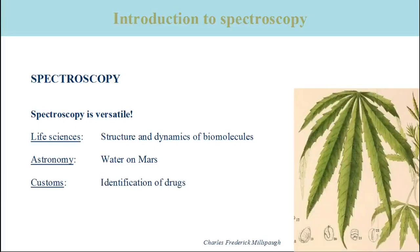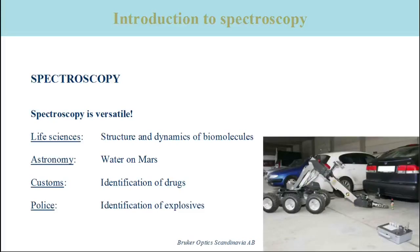Another example comes from customs, which uses this technique to identify drugs. For example, when they confiscate a suspicious powder, they have to know what it contains, so they use this technique to identify the content of the powder. The police also uses this technique to identify explosives. The slide here shows a robot that can be used to study a suspicious object — it opens the object, takes out a sample, moves it to the spectrometer, and the spectrometer can then tell whether the object contains explosives or not.